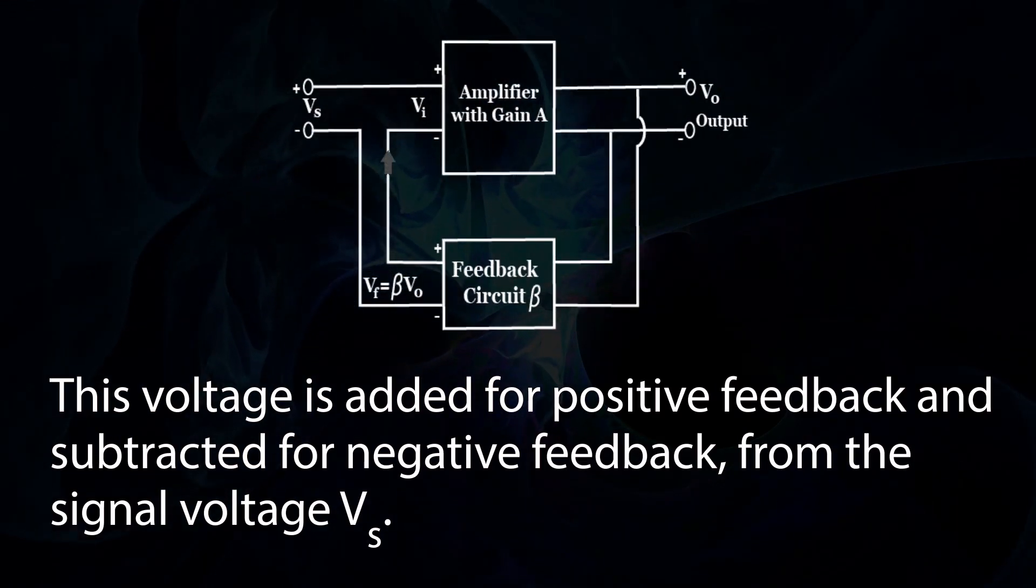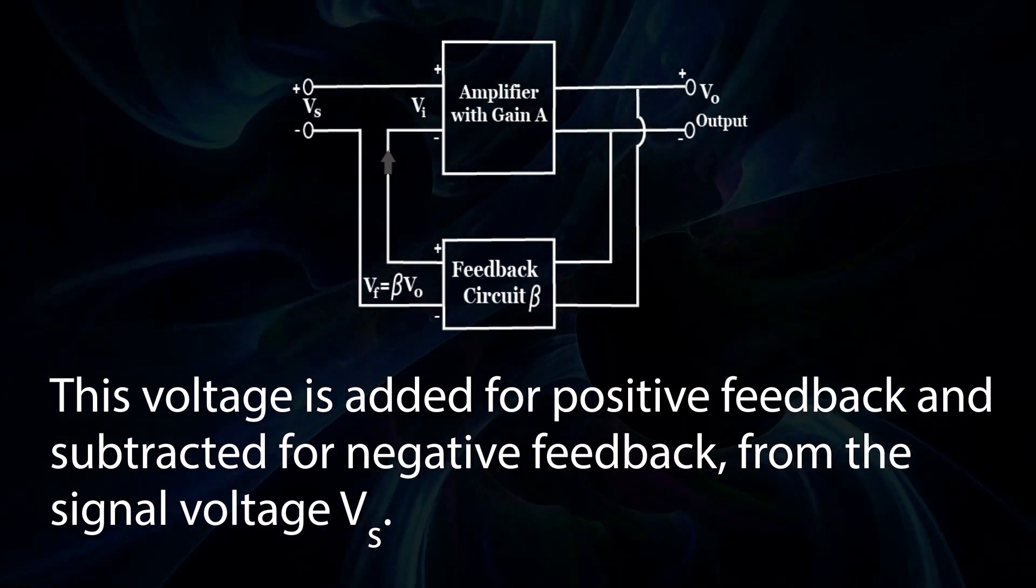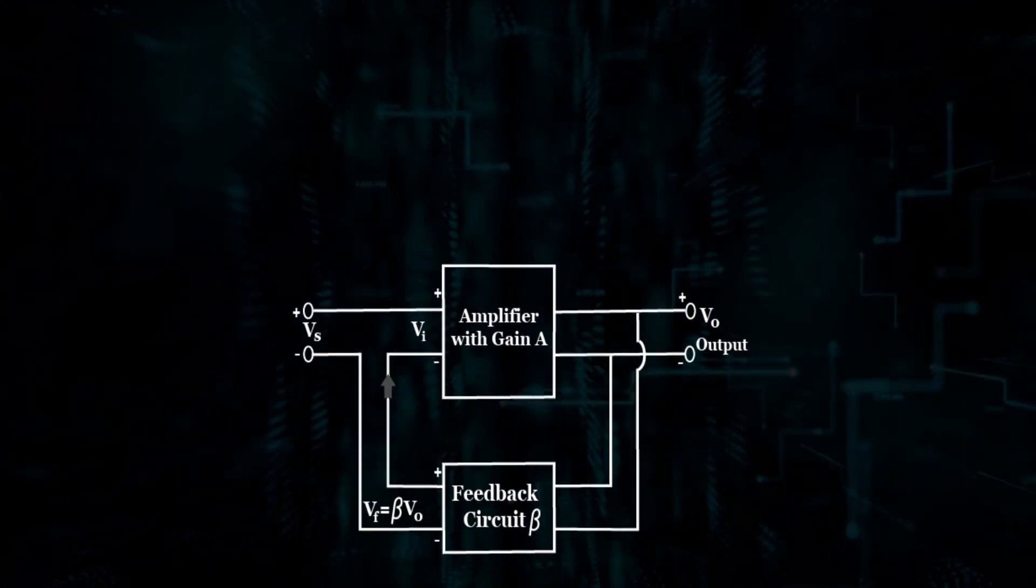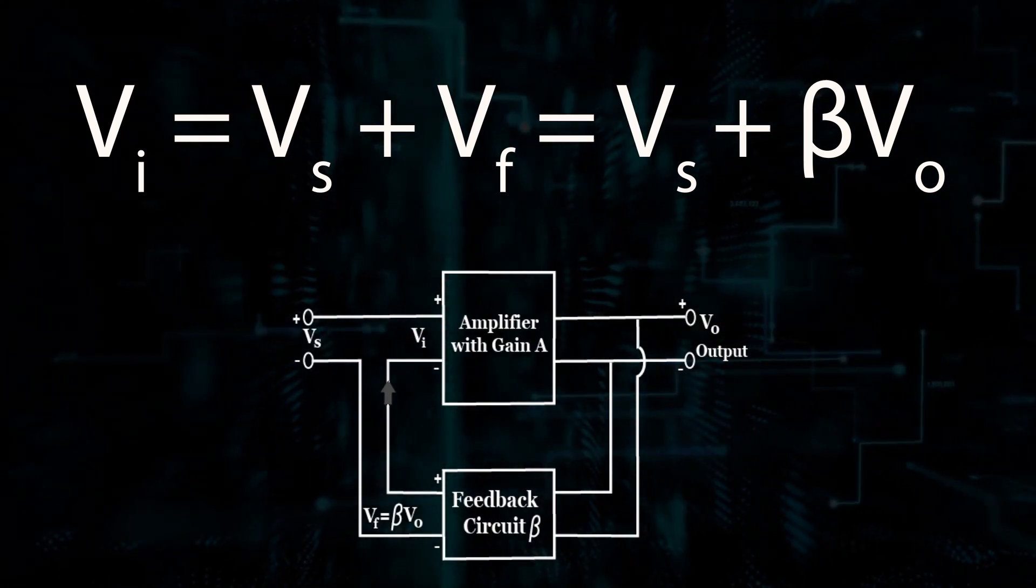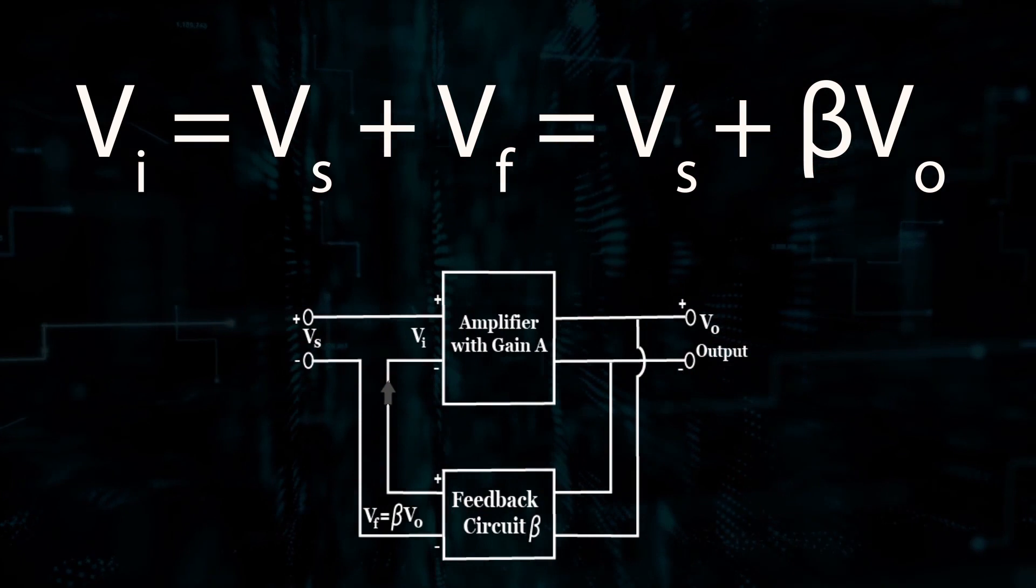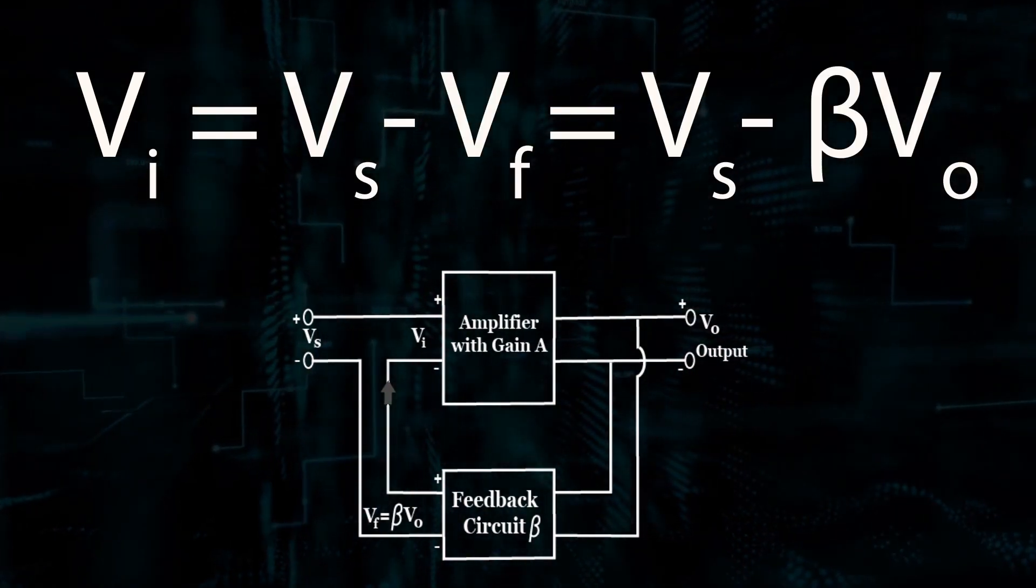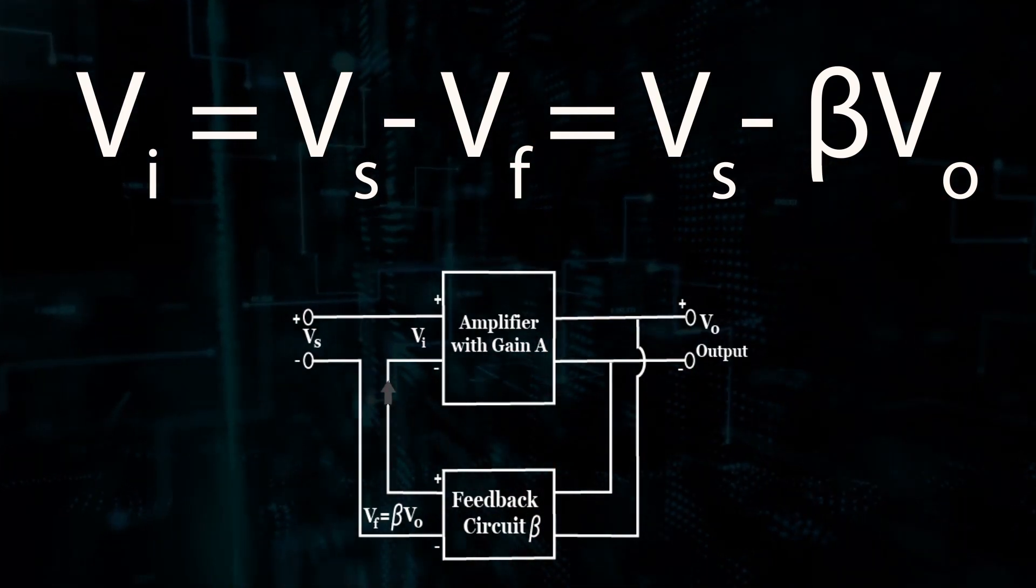This voltage is added for positive feedback and subtracted for negative feedback from the signal voltage Vs. Then Vi equals Vs plus Vf equals Vs plus beta into Vo. Vi equals Vs minus Vf equals Vs minus beta into Vo.